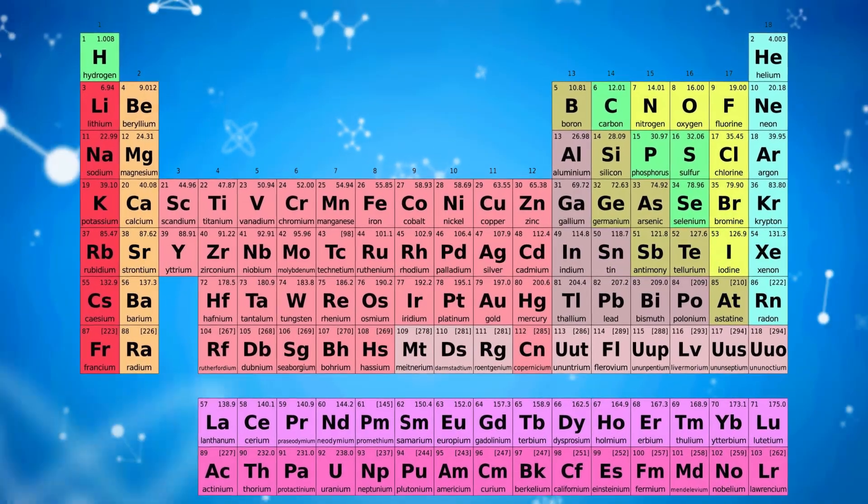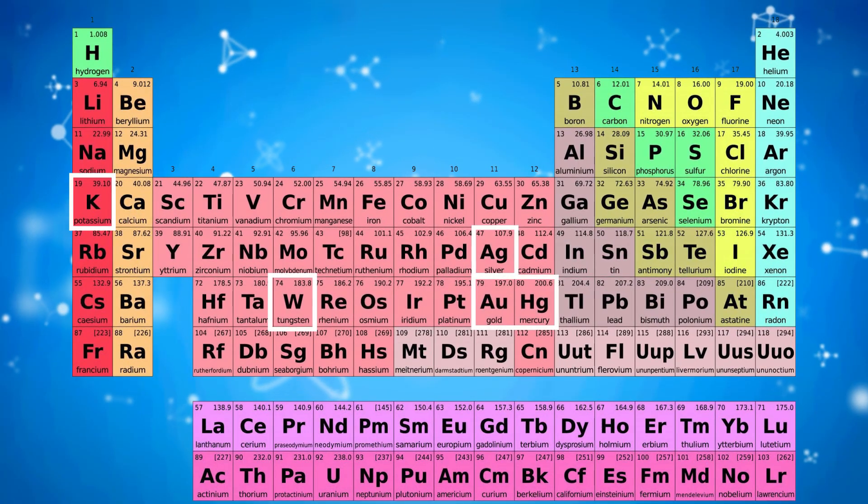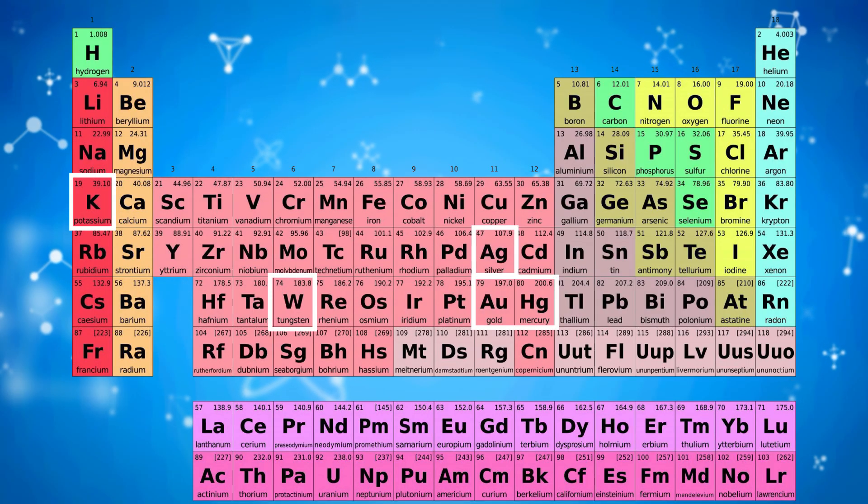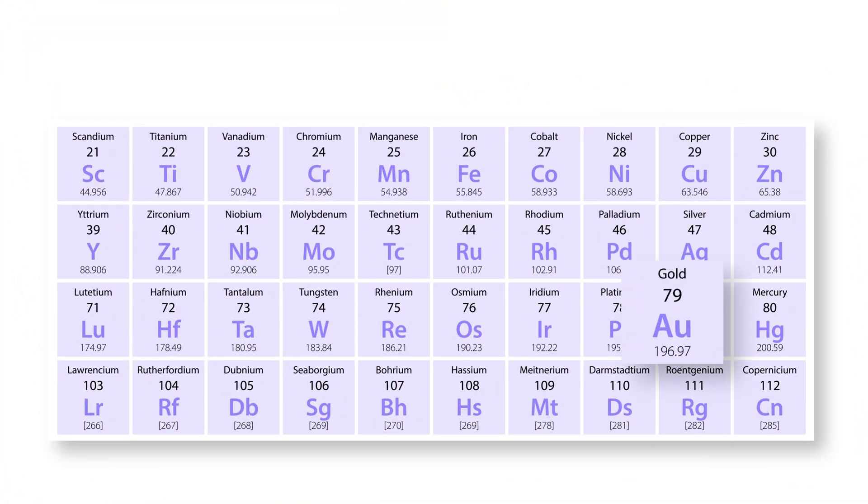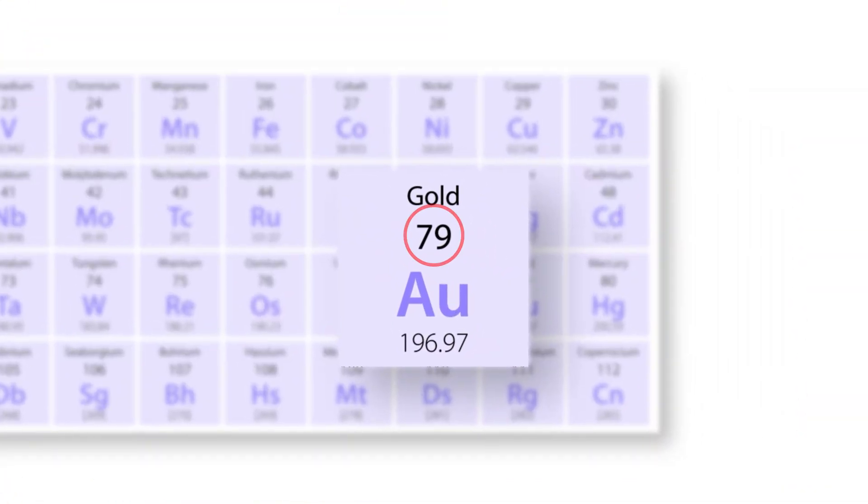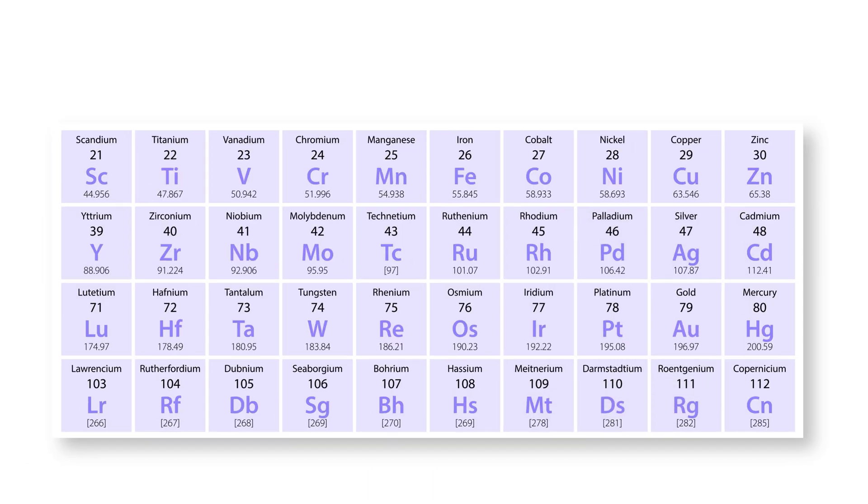Remember how some elements have symbols different than their proper names? Do you remember the symbol for gold? It's Au. Gold is a solid with an atomic number of 79 and an atomic weight of 196.966569. It is in group 11.